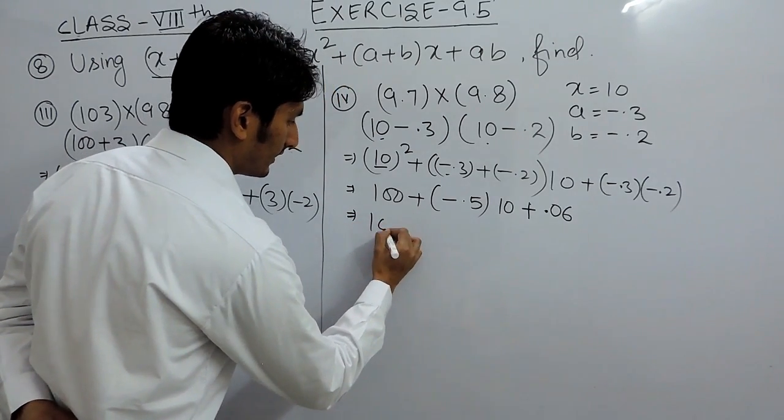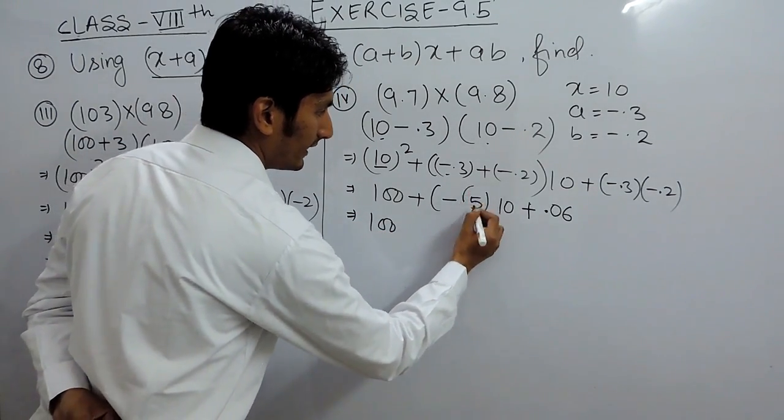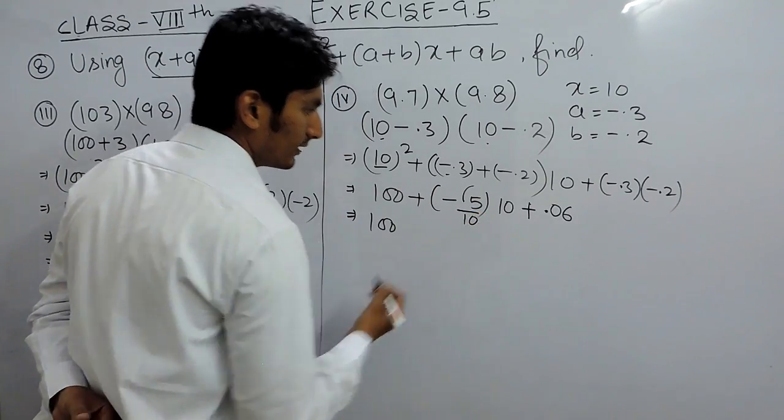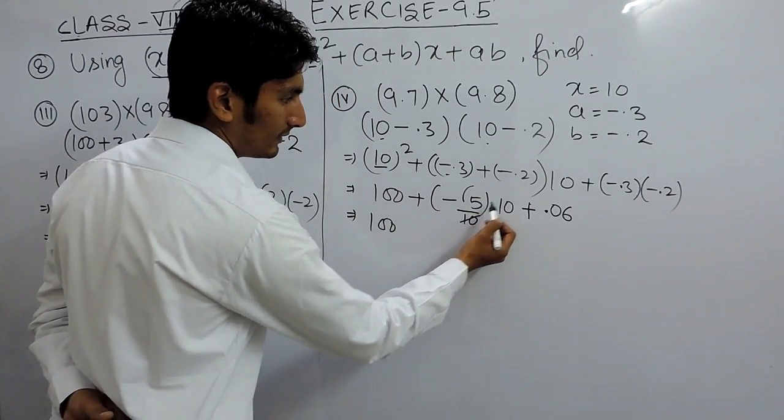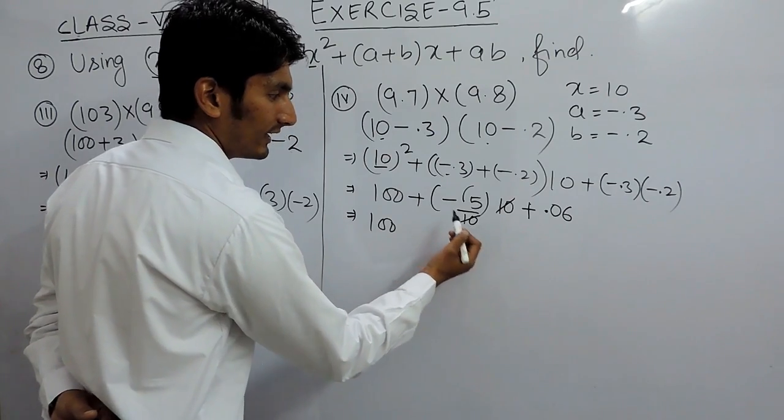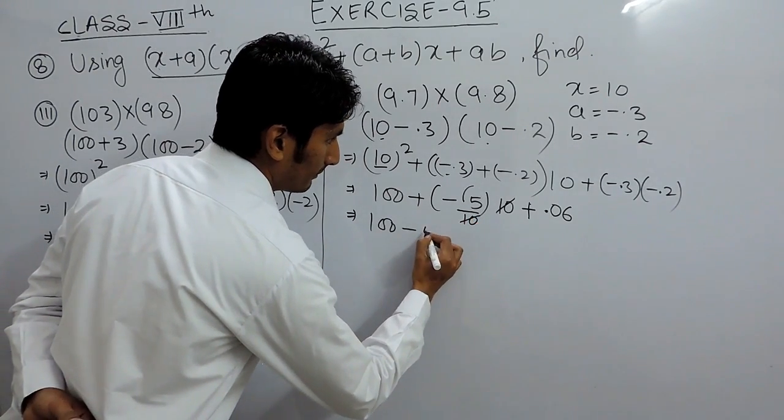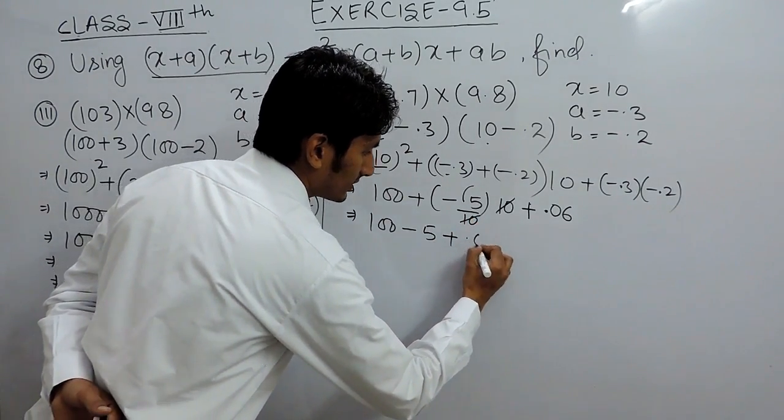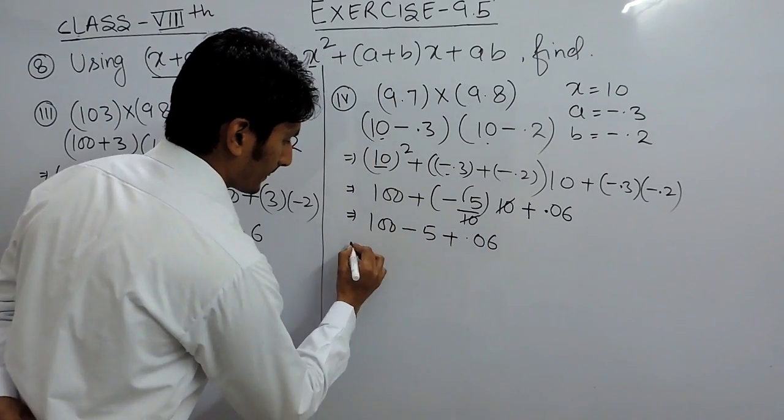This is 100, and 0.5 times 10 equals 5, so this becomes minus 5, and this is plus 0.06.